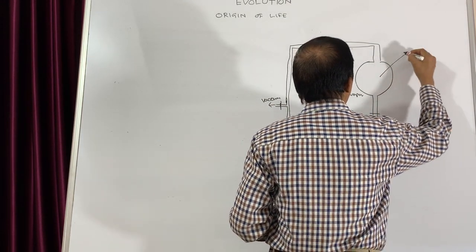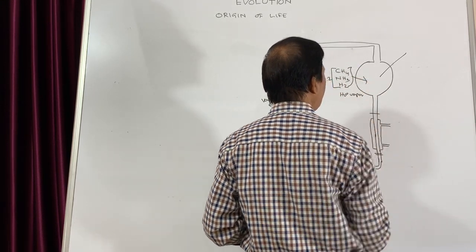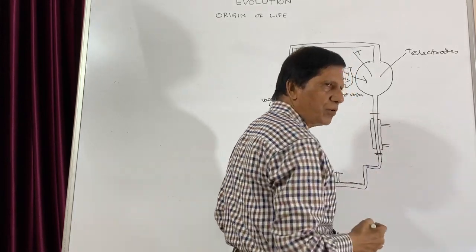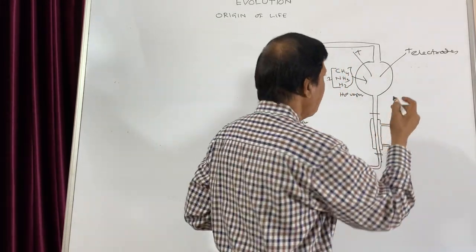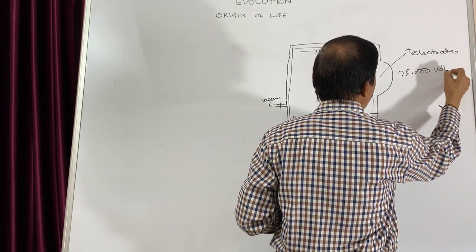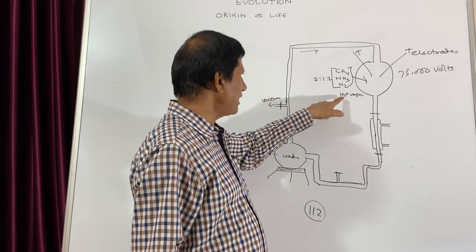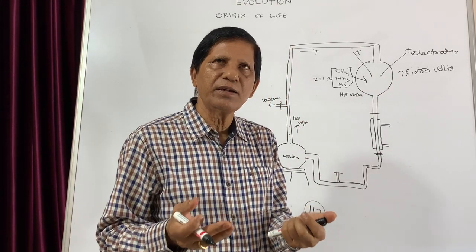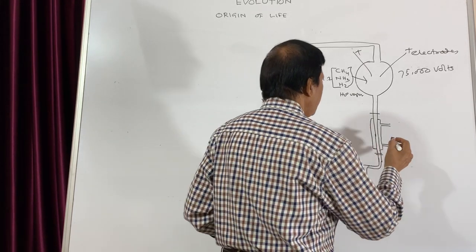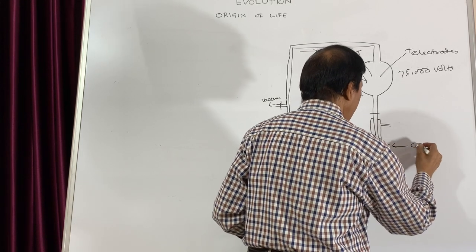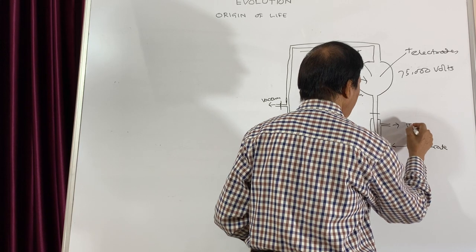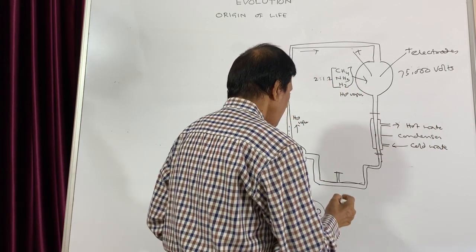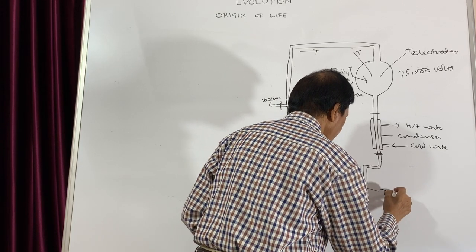All these gases are present inside along with water vapour, and these are connected to electrodes through which 75,000 volts of energy is given. That means these three gases along with water vapour will combine with 75,000 volts of energy, and that is the energy present in the lightning. Then this is the inlet for cold water, and this is for removal of hot water. And this is the condenser - the tube.